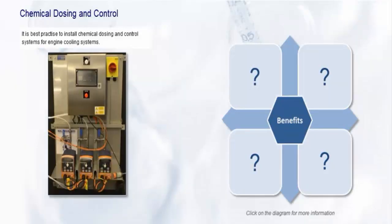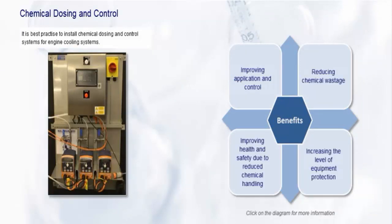It is best practice to install chemical dosing and control systems for engine cooling systems. The NALTRAC 1000 control system works by directly monitoring the conductivity of the cooling water. Conductivity is proportional to the level of corrosion inhibitor and the product is dosed to meet a control set point.